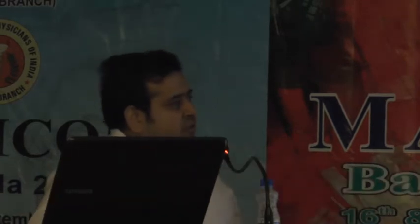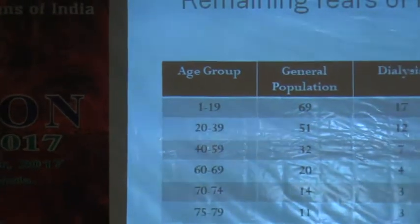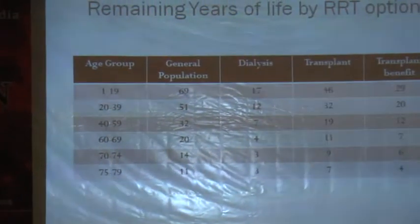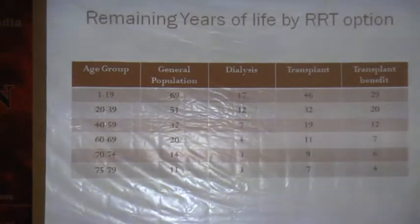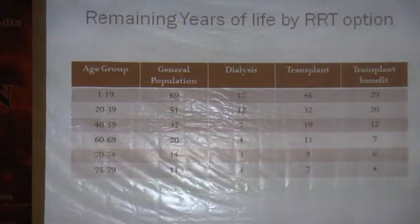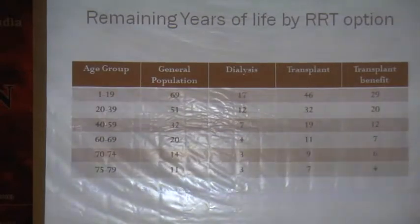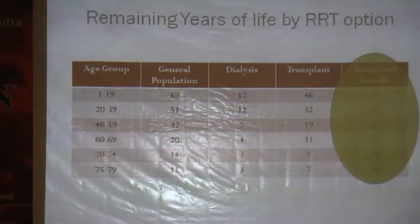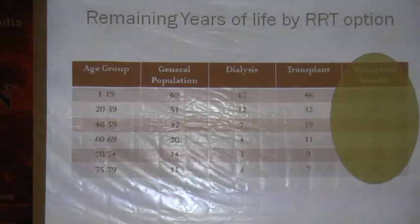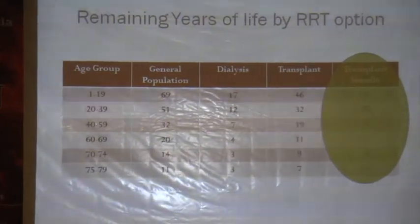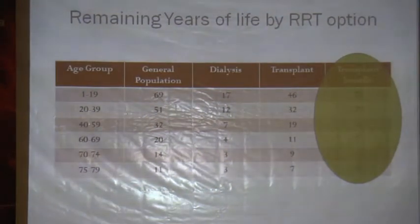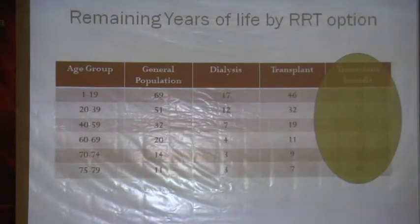An important chart: a person aged 1–19 years in the general population has a life expectancy of 69 years. With a transplant, that comes down to just 29 years. Both forms of dialysis — peritoneal and hemodialysis — have the same survival with no advantage over each other, giving only about 17 years. The younger the age group, the more years gained from transplant. Yet survival remains less than half of what it would have been without end-stage renal disease. Even transplant as a modality is very suboptimal at the present day.